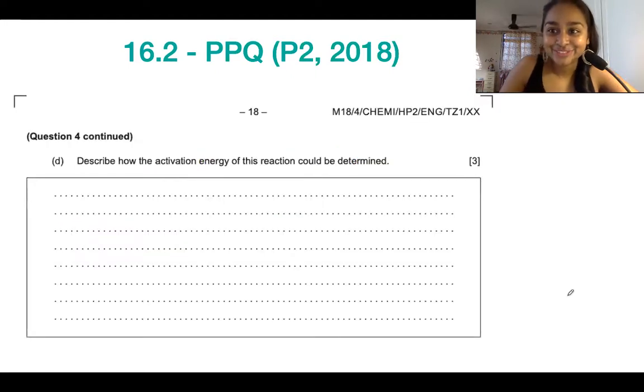Another question from 16.2 as well is this one over here. So I've taken this one from the 2018 paper. And this question is a little bit unorthodox in terms of its wording, but it says, describe how the activation energy of this reaction could be determined. So in the entirety of the chemistry syllabus, we really talk about activation energy mostly in topic six. So 16.2 is the only kind of subtopic that gives you an idea of how we could determine this.